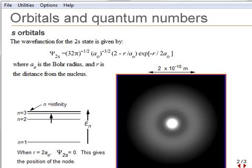The 2s wave functions go to 0 at a distance of r equals 2a0. That is, the wave function for 2s electrons have a node at 2 Bohr radii from the nucleus.